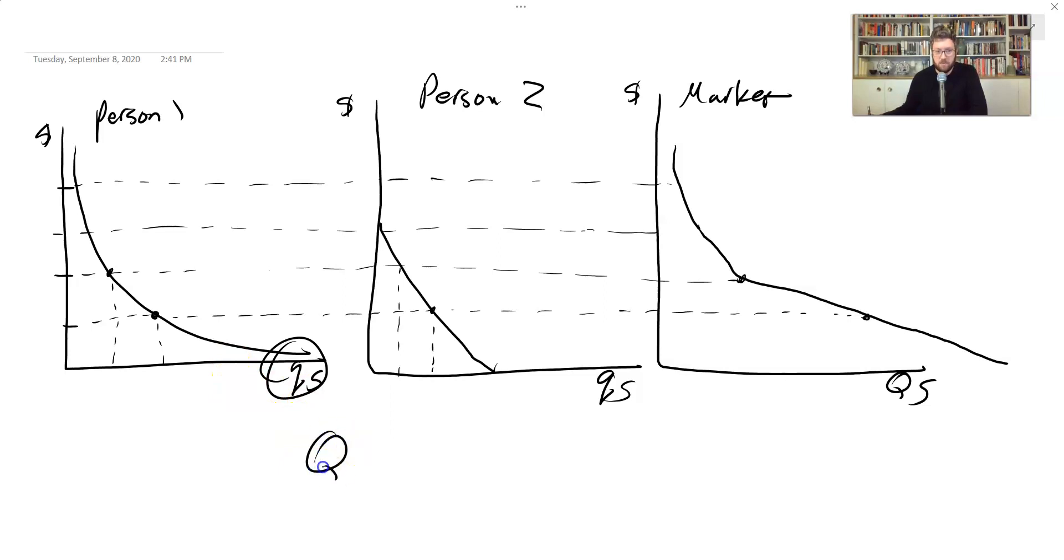So the total demand is equal to the individual demand of each person in the market. If there's N people, we add them all up like so. And in the simplest case, again, in the simple case where everyone's identical—